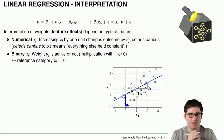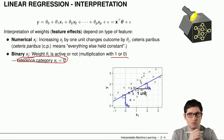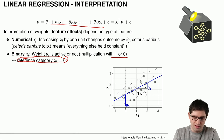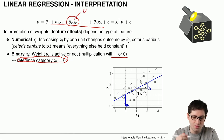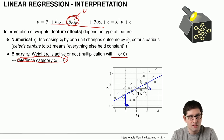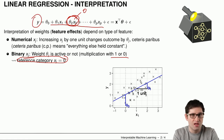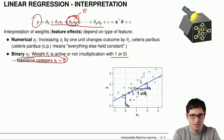Binary or categorical features are usually encoded as zero or one. The category labeled as zero is the so-called reference category. If a categorical feature is multiplied by its coefficient theta two, and the feature value is zero, the entire term becomes zero — meaning the weight is inactive and does not change the outcome.